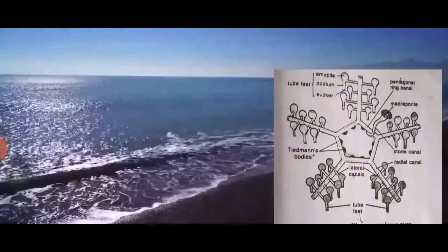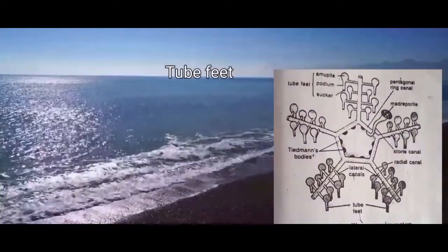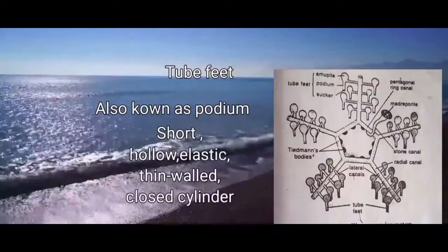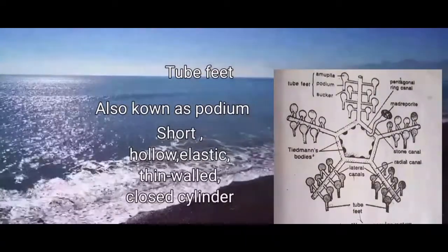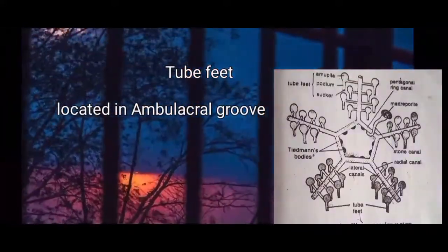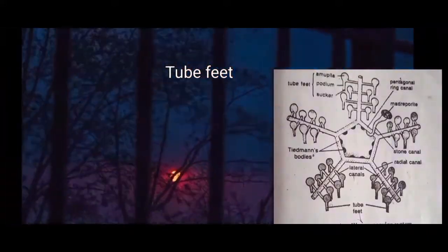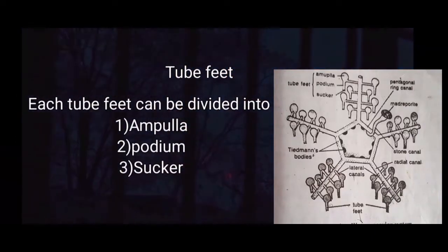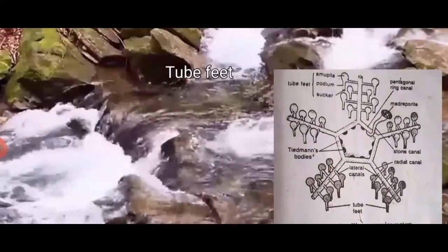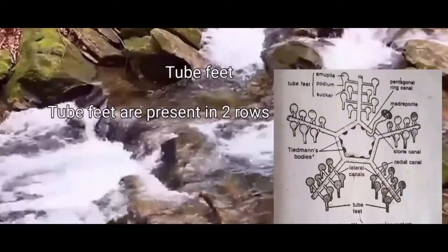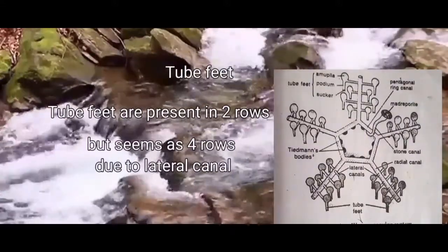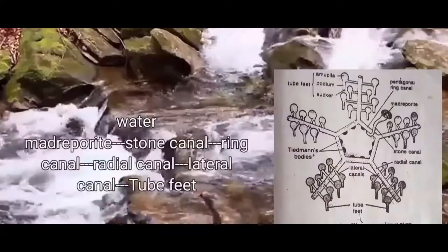Now let us talk about tube feet. Tube feet are also known as podia. They are short, hollow, elastic, and thin-walled, closed and cylindrical in shape. They are located in the ambulacral groove. Tube feet can be distinguished into three parts: ampulla, podium, and sucker. The tube feet are usually present in two rows, but as the lateral canals are alternately long and short, they appear to be arranged in four rows.